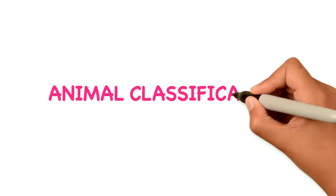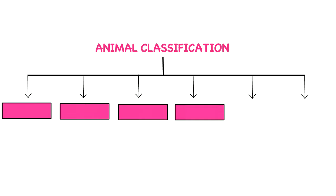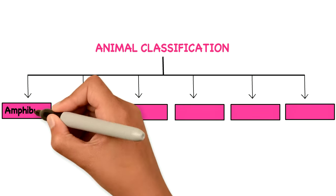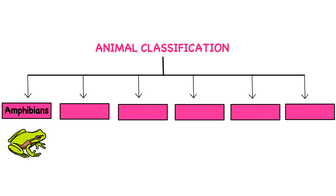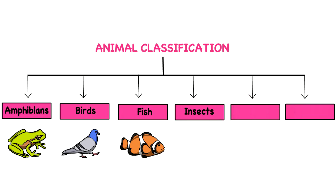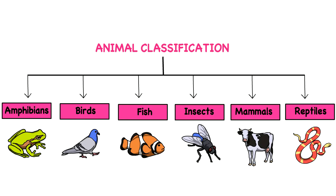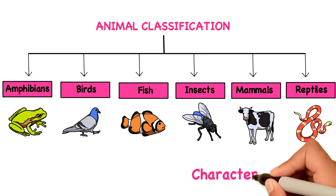Animal classification. Animals can be divided into six groups: amphibians, birds, fish, insects, mammals, and reptiles. Animals are divided into these groups according to the different characteristics they have.